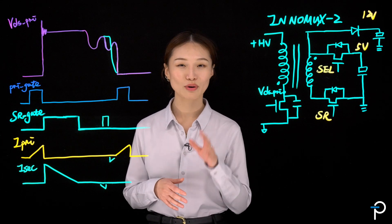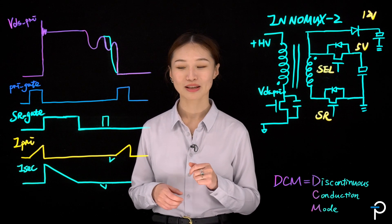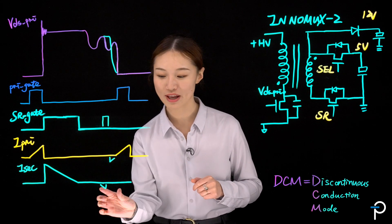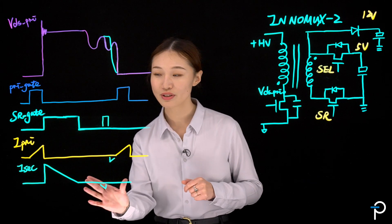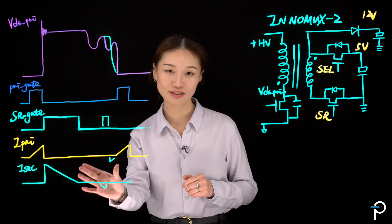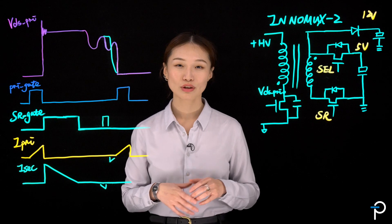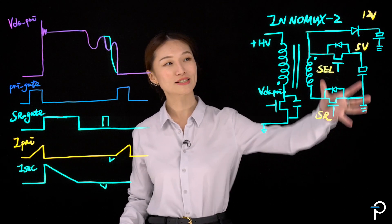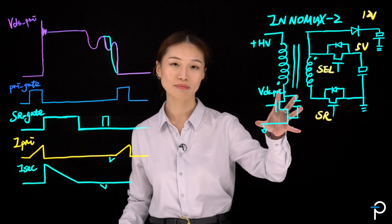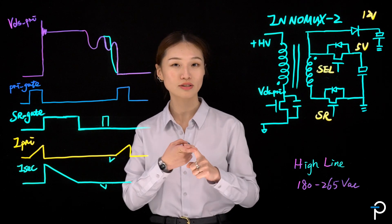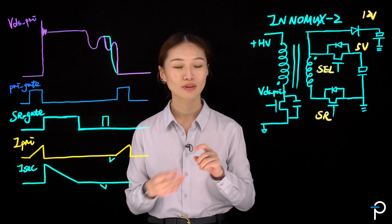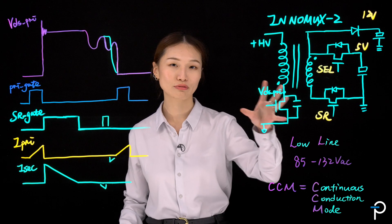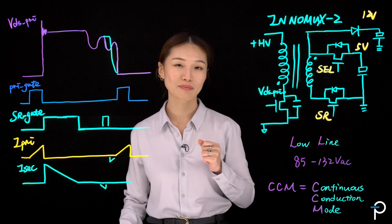The SRZVS function is only available at DCM. This is because in order to create this reverse current, you need a secondary current to be discontinuous first. So for designers, we normally design the power supply to run at DCM at high line. This optimizes the switching loss and the component stress.